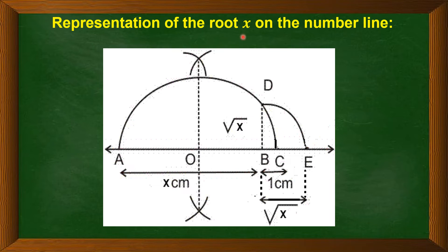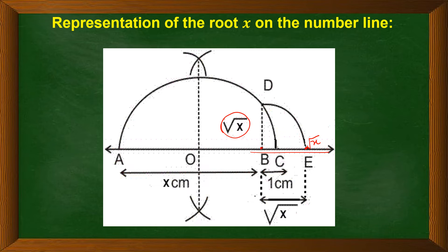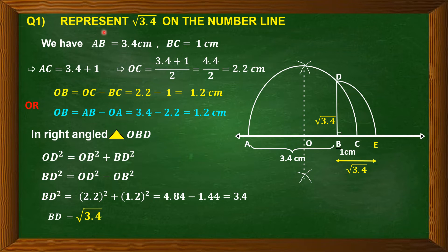Now, how to represent √x on the number line: BD is already proven to equal √x. With B as center and radius BD (equal to √x), draw an arc cutting the number line at E. This point E represents √x on the number line, and the distance BE equals √x centimeters.